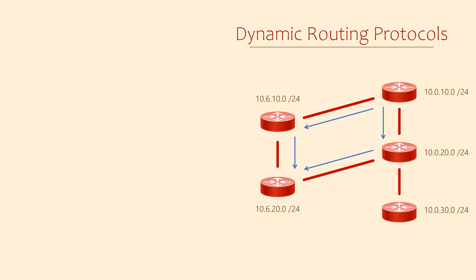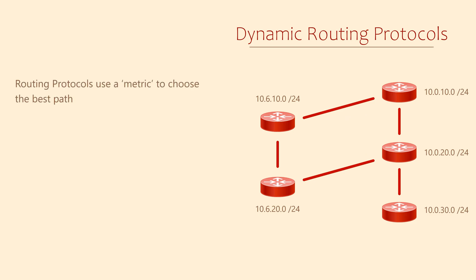The method it uses is a bit like spanning tree. Each path will have a metric — a number that shows how long the path is. The routing protocol will see that one path has a lower metric than another; the lower the metric, the better the path. There are a few different routing protocols, and each has their own way of calculating the metric and deciding which path is better.